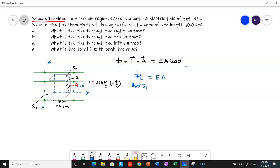The angle between the electric field and the area vector is zero degrees. Cosθ = cos(0) = 1, so it's just E times A. Substitute: 360 newtons per Coulomb times the area L squared.